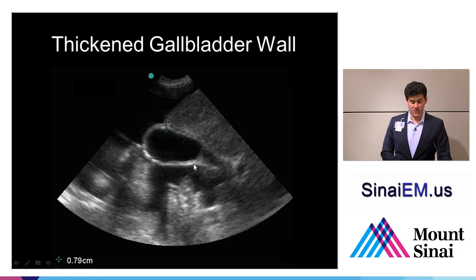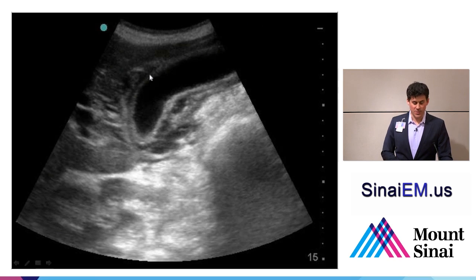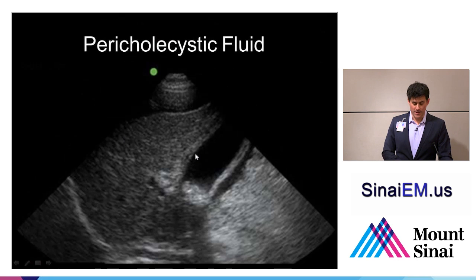Here's a thickened gallbladder wall measured at almost 8 millimeters. Unfortunately, this patient also has pericholecystic fluid — or in this case, ascites — so you really can't read the wall thickening in isolation in that setting. Here we can see advanced gangrenous cholecystitis with a very thickened gallbladder wall. Even in this advanced state of disease, with pericholecystic fluid surrounding it posteriorly and fluid intercalated into the gallbladder wall, the wall itself is still bright. And here we see cholecystitis with stones and shadowing, thickened gallbladder wall, and pericholecystic fluid.